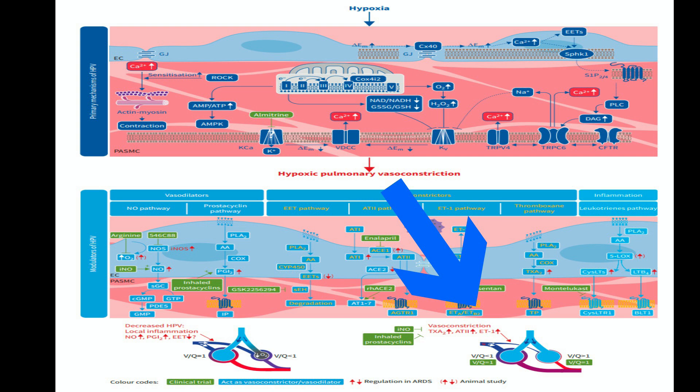Inhaled nitric oxide and prostacyclins enhance vasodilation only in ventilated lung areas, improving V/Q matching by reducing blood flow redistribution. Note that these therapeutic approaches have been or are being tested in clinical trials. Changes in the levels of different vasoactive substances in ARDS are denoted with red arrows, with brackets around arrows when the data is only available from animal studies.